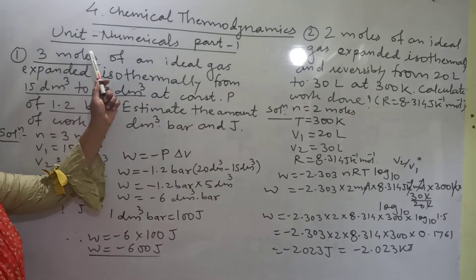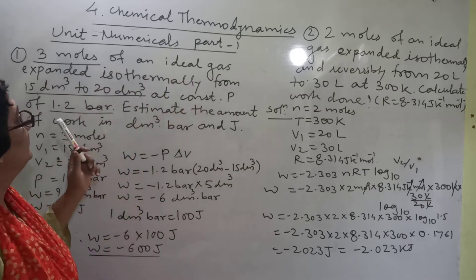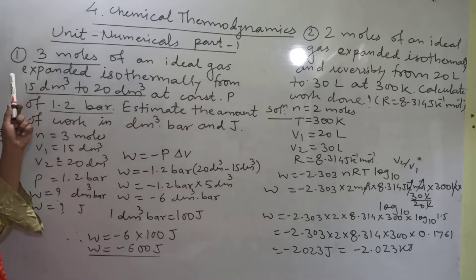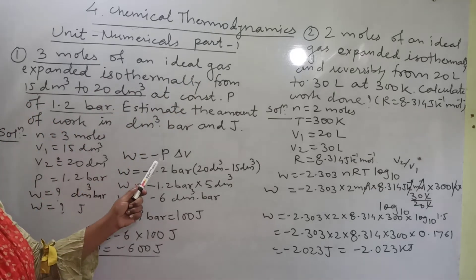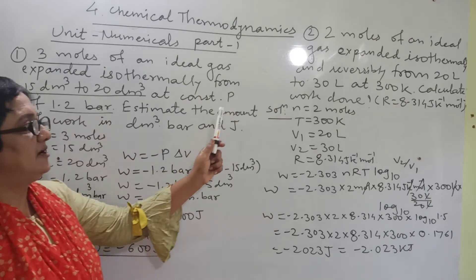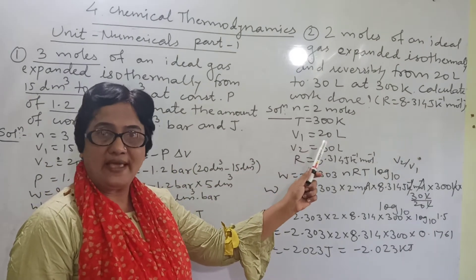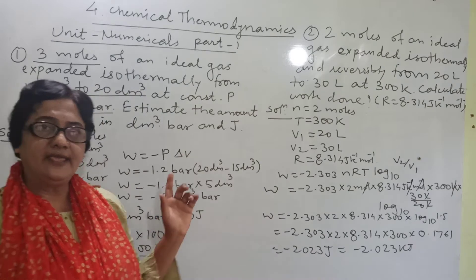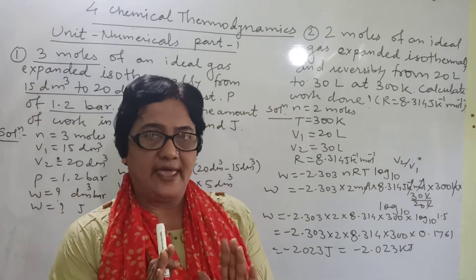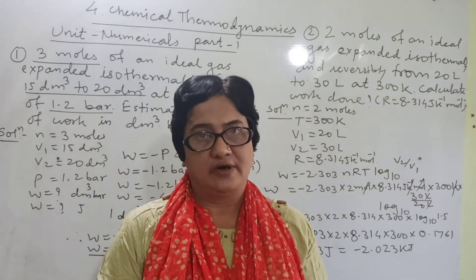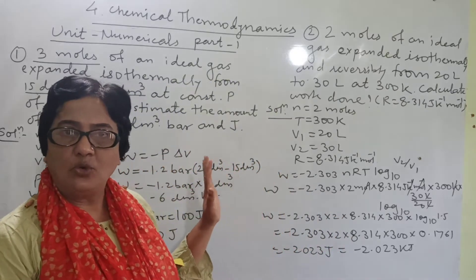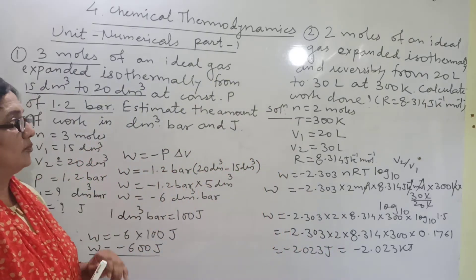Now the numerical part 1. First problem is related to pressure volume type of work, and the second problem is related to maximum work. We are taking one example of each formula so you will understand how to calculate and how to use the formula.